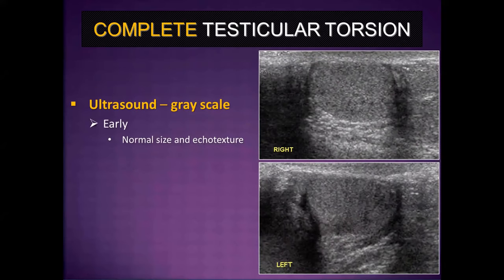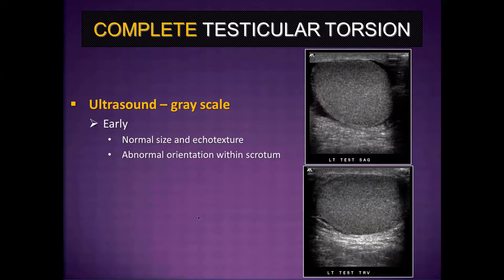With complete testicular torsion, the ultrasound grayscale findings really depend on the duration of vascular compromise. In the early phases, the grayscale findings are actually normal. One interesting subtle finding is that the torsion testicle can assume an abnormal orientation within the scrotal sac. If you notice that image labels for sagittal and transverse appear swapped, in a patient presenting with testicular pain, you should be thinking this might be a torsion. Color Doppler interrogation is really where the money is at — that's your key way of making the diagnosis.